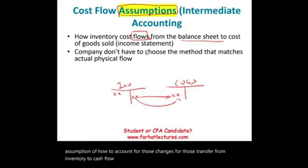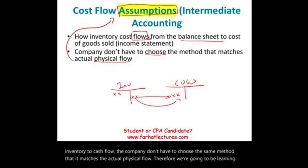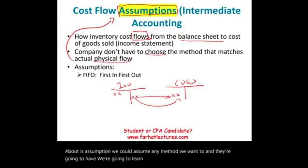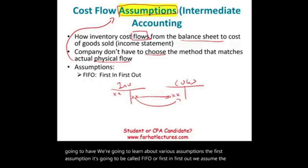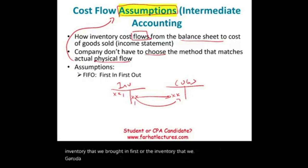The company doesn't have to choose the same method that matches the actual physical flow. Therefore, what we're going to learn about is assumption — we could assume any method we want. The first assumption is called FIFO, or first in, first out. We assume the inventory that we brought in first is the inventory that we get rid of first.